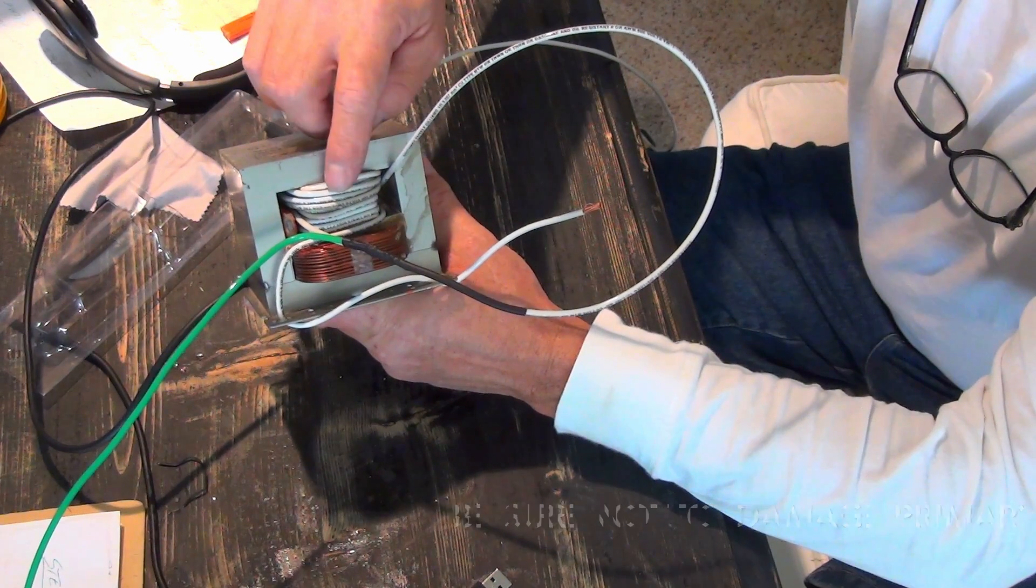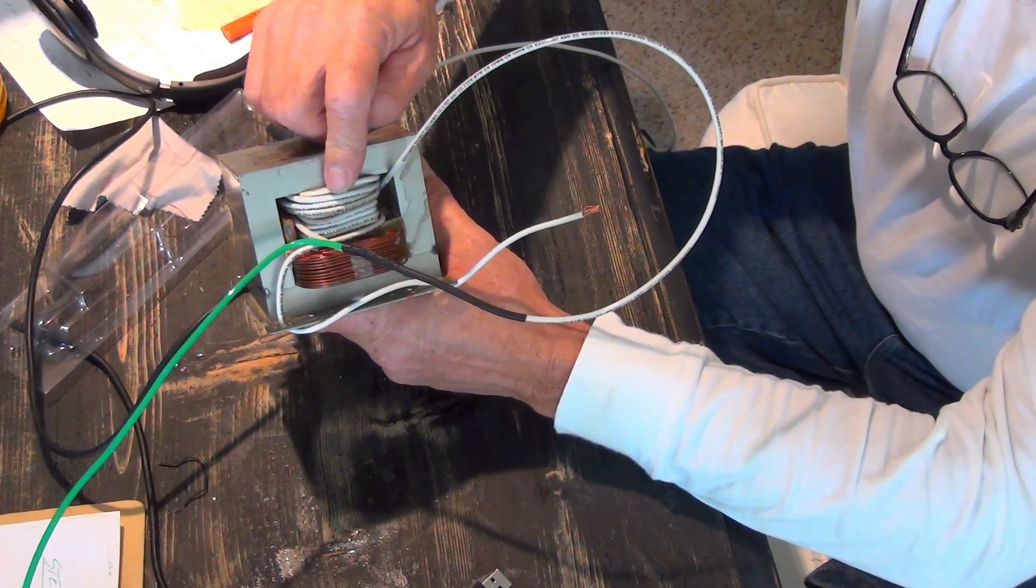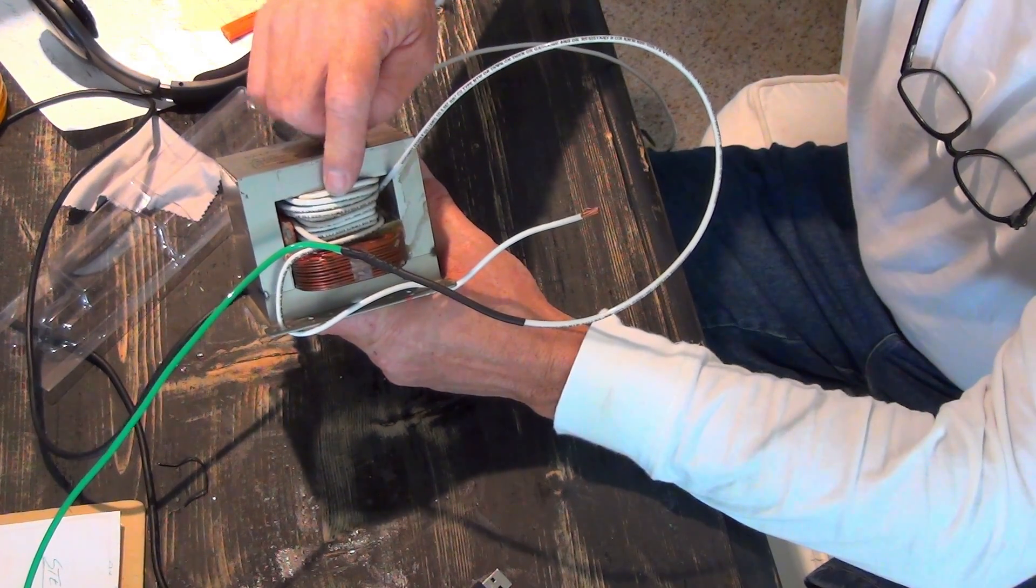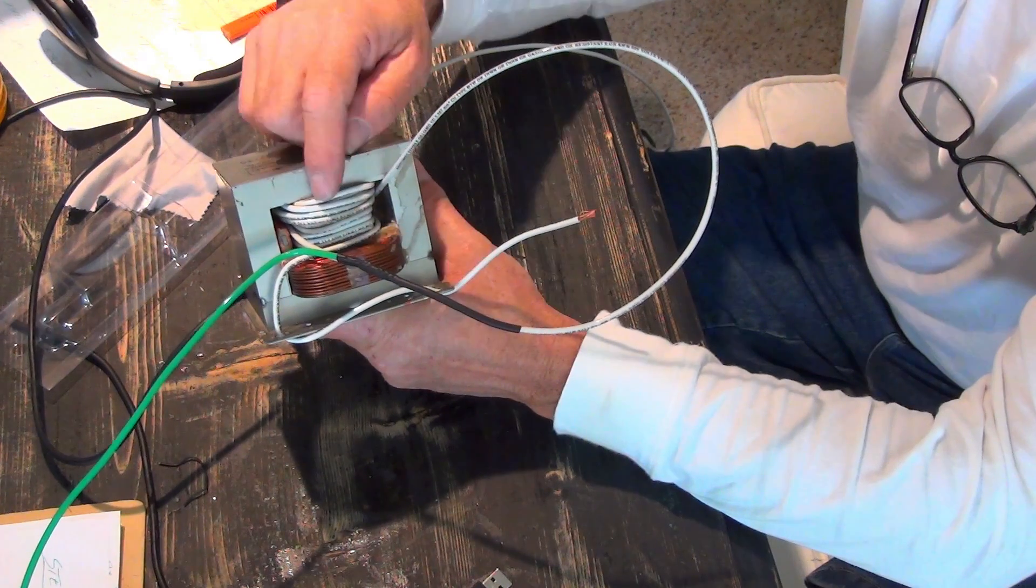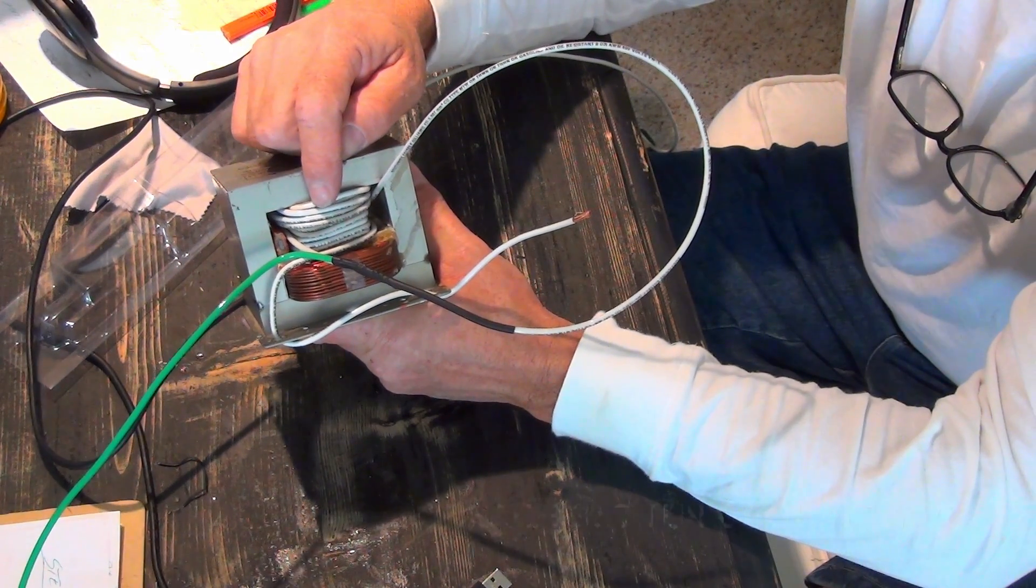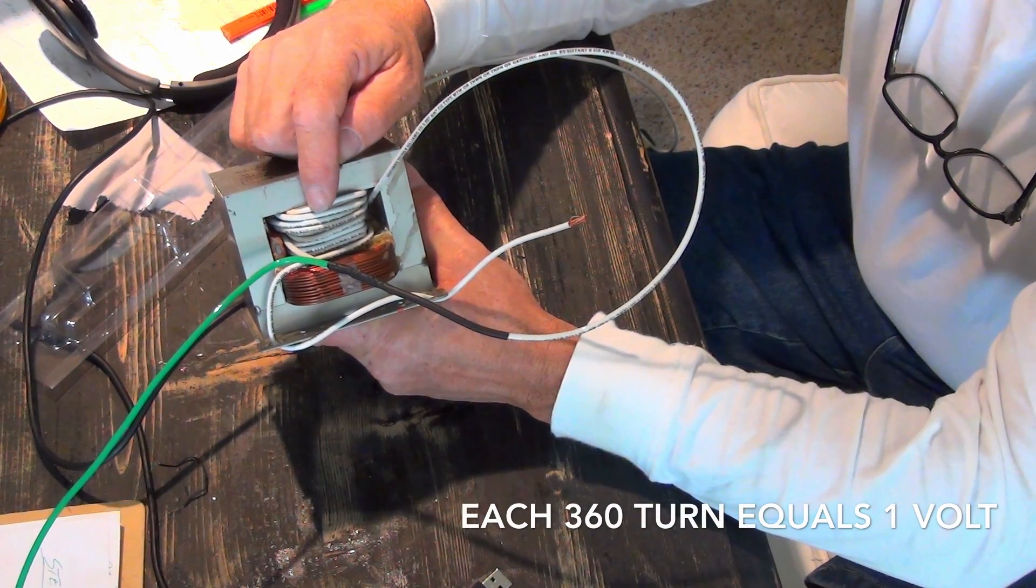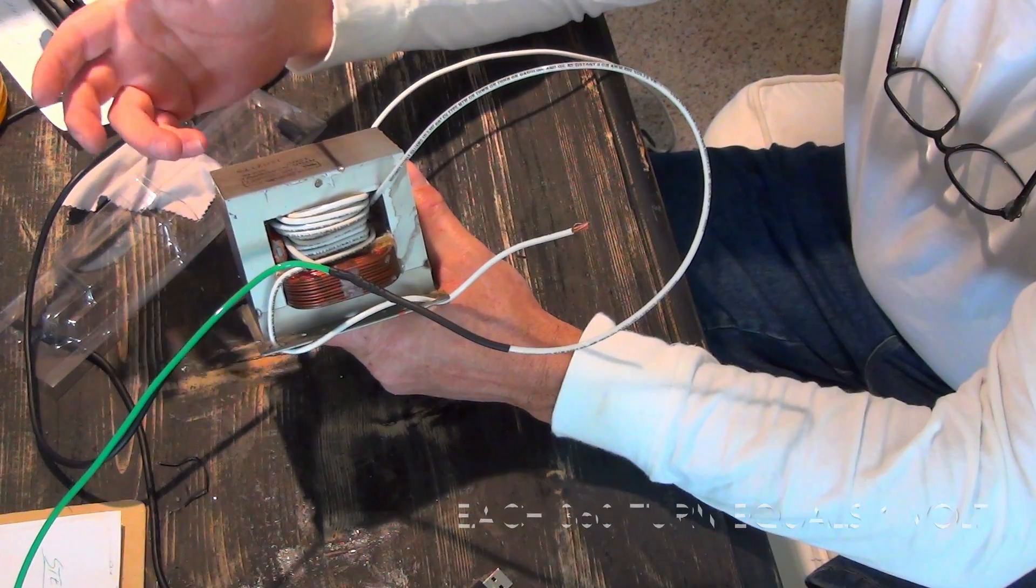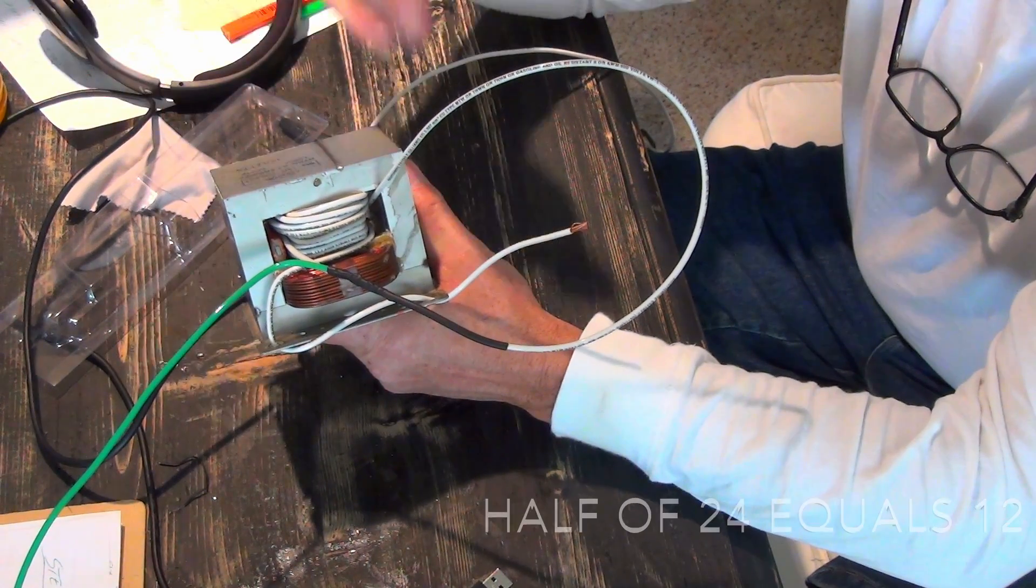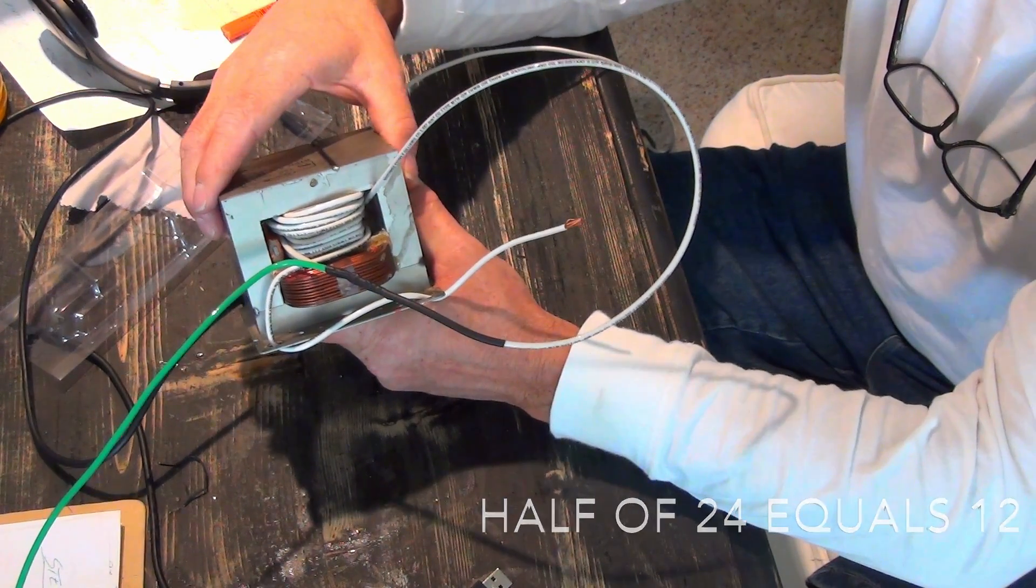And we're putting in our own secondary to transform from 110 volts, which is the primary coil here which we left, to our new 24 wrap, 12 gauge stranded coil, which will give us 24 volts of alternating current. And then when we step it down to low voltage, that's right at 12 volts.